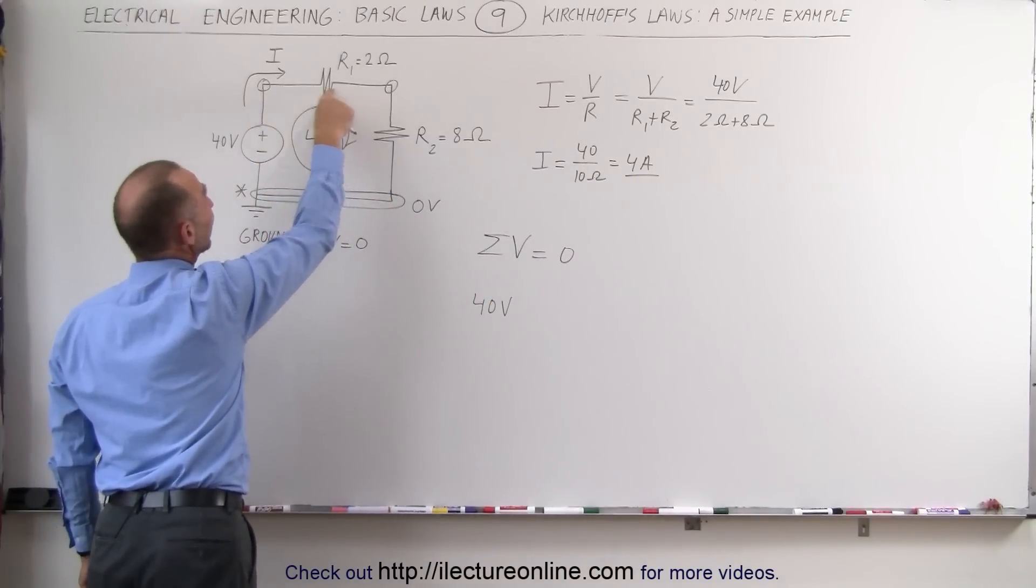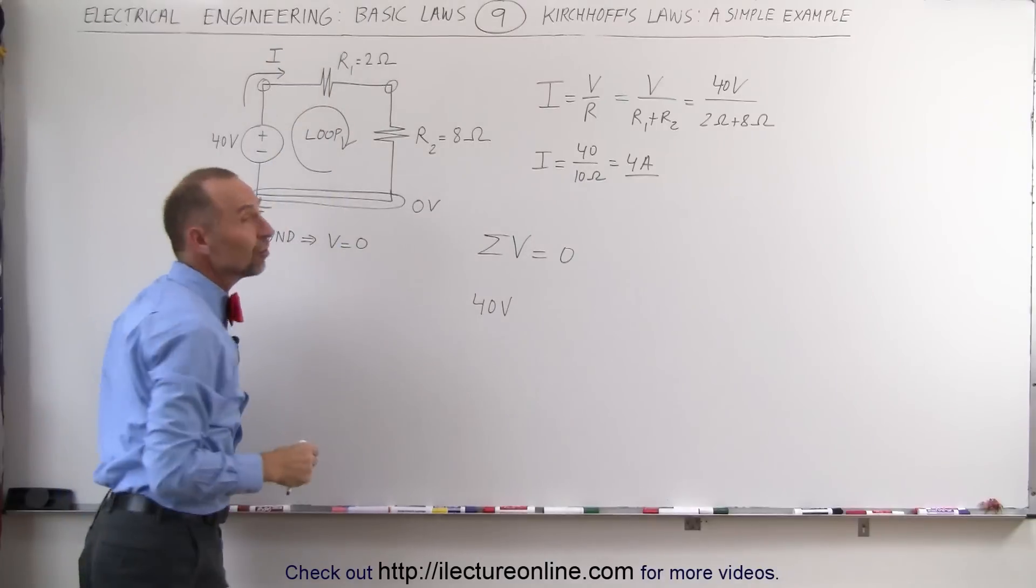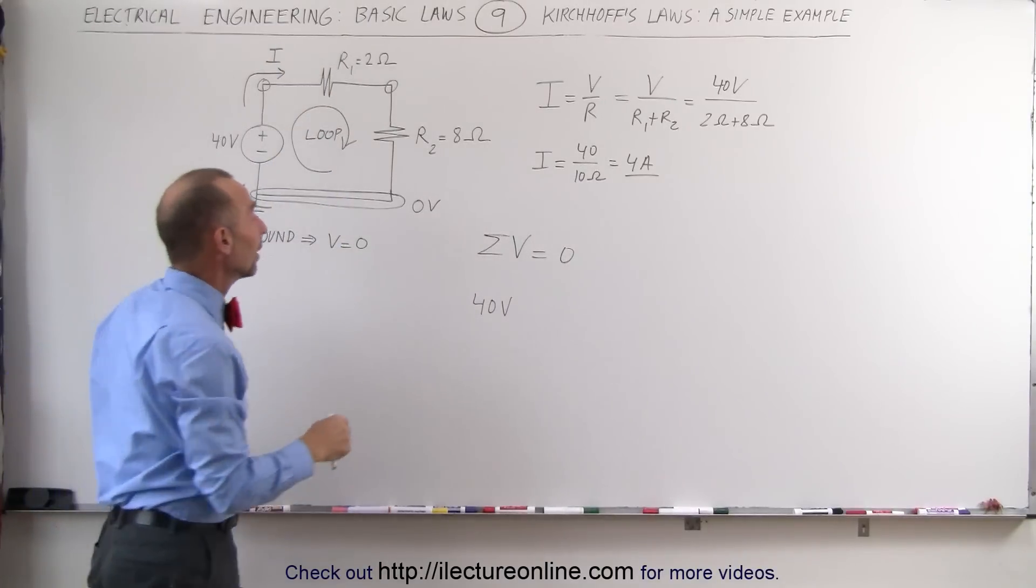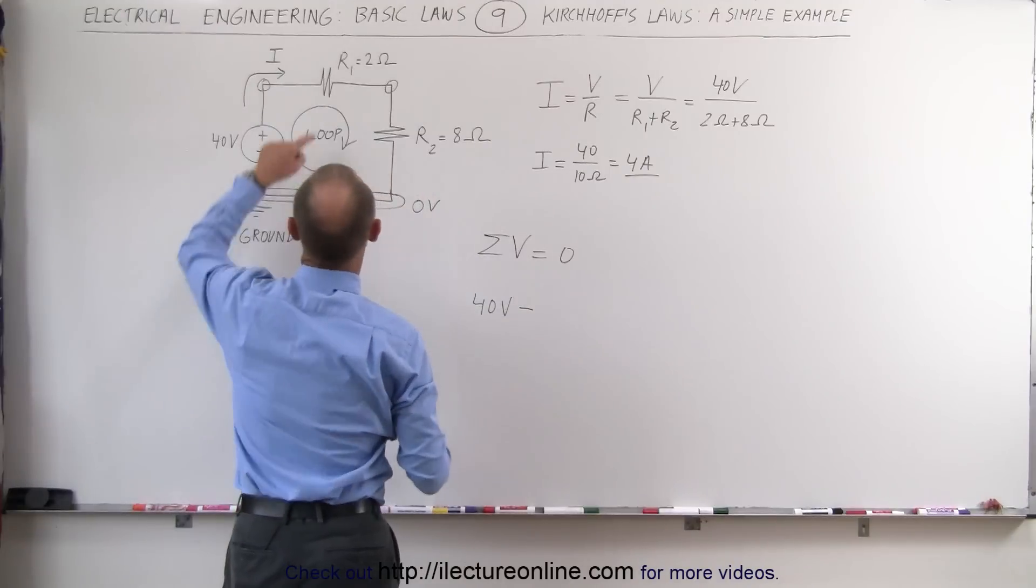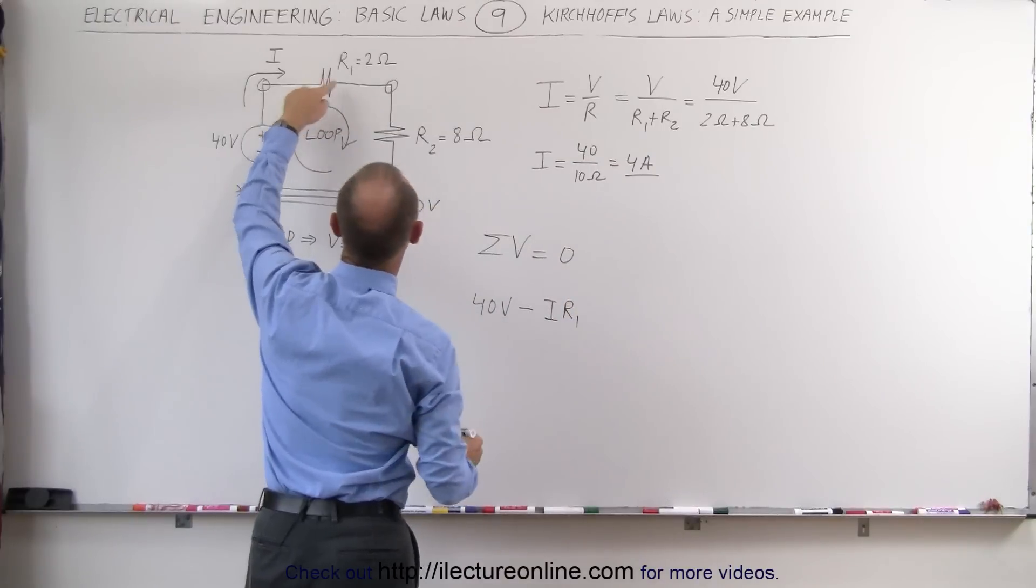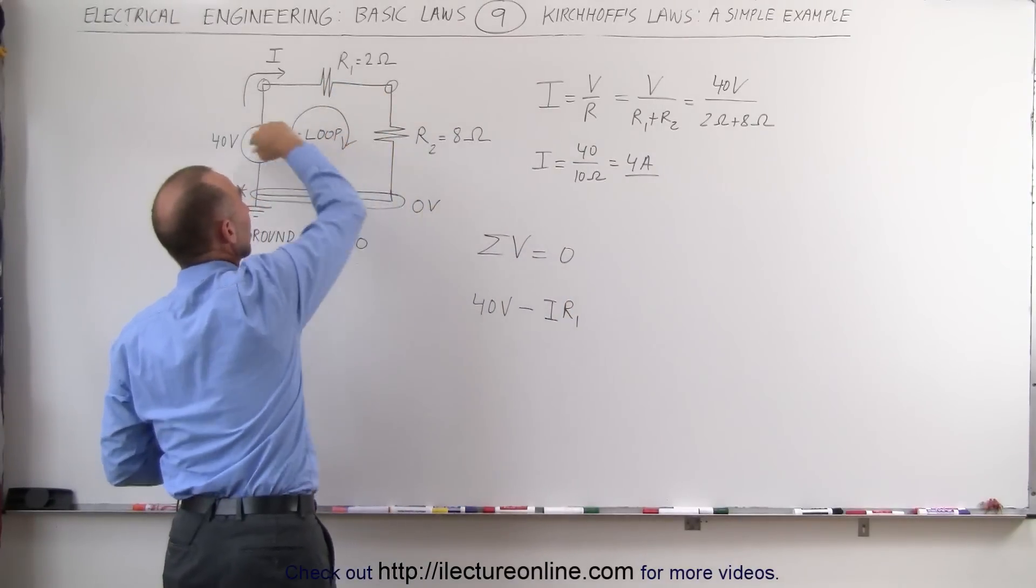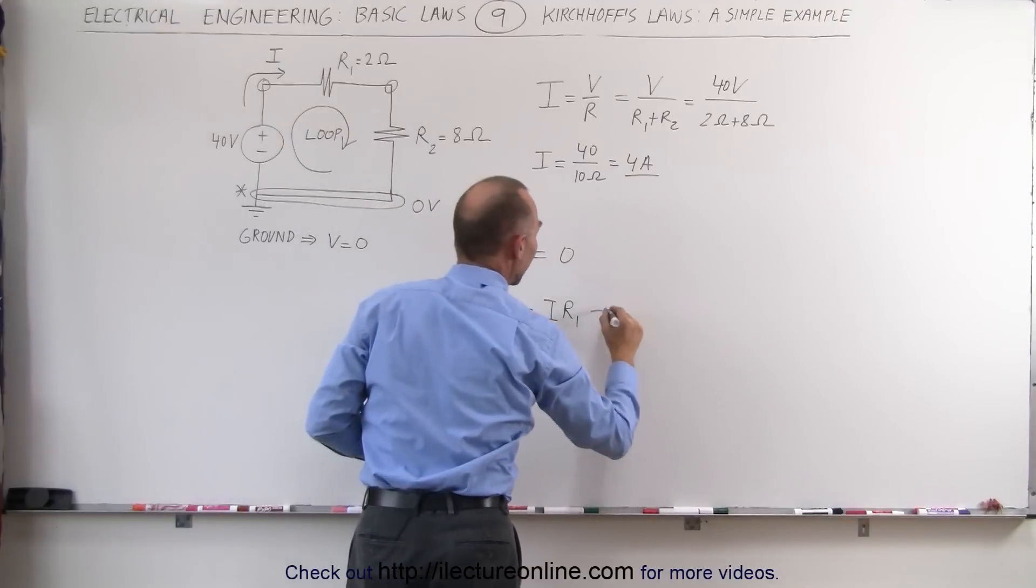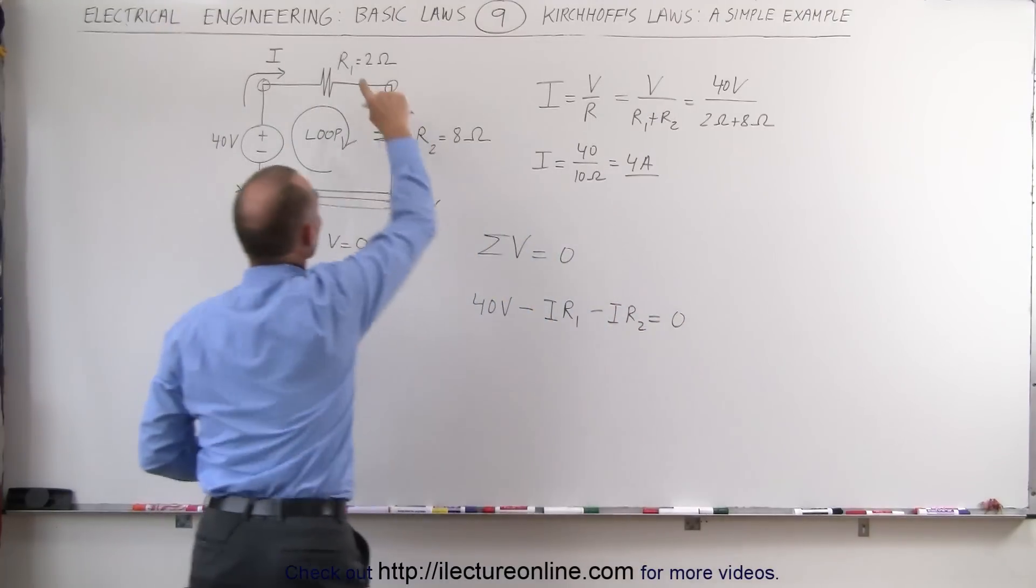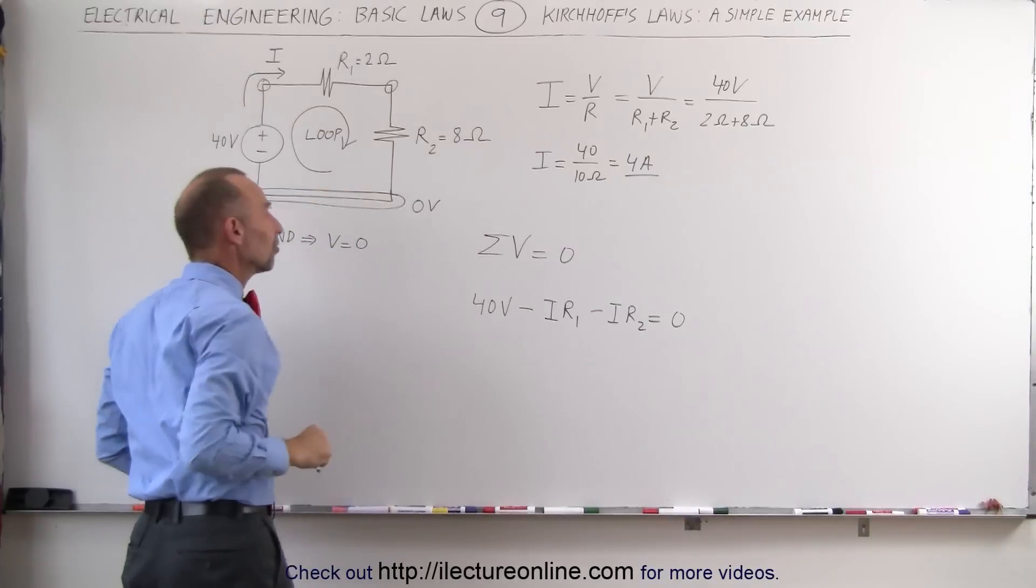That is a 40 volt rise. So 40 volts across the battery. Now we travel across the resistor in the same direction as the current. That means we add a voltage drop. That means it's a negative voltage rise. Minus I, the current, times the resistor R1. We travel across this resistor, also in the same direction as the current. Again, minus the current times R2. And that should add up to zero because now we go back to the same node where we started from.